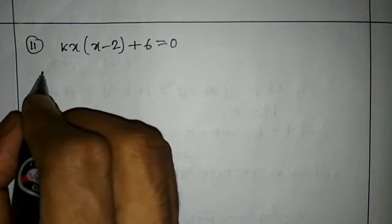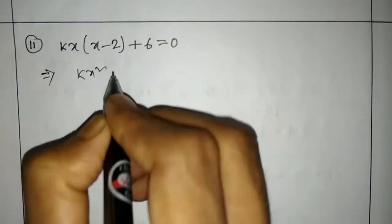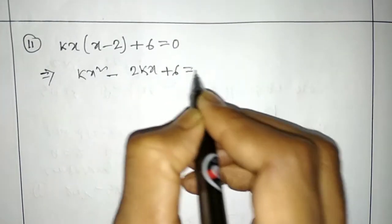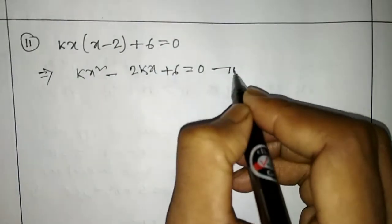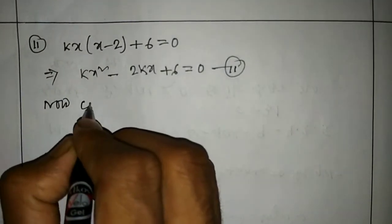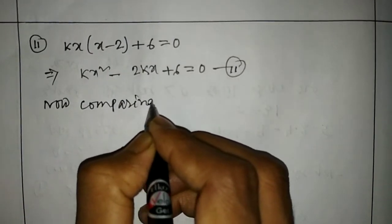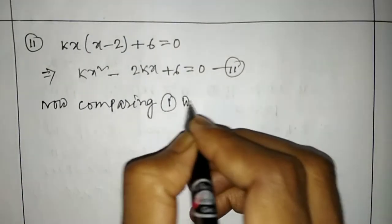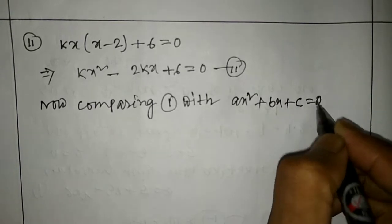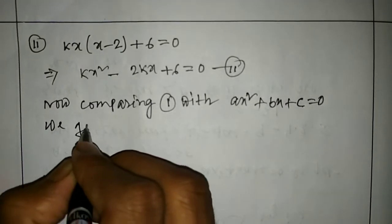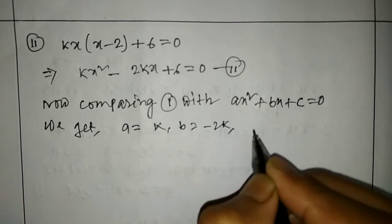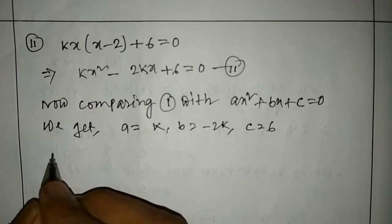This is question number 2: kx(x minus 2) plus 6 equals 0. Expanding: kx squared minus 2kx plus 6 equals 0. Comparing with ax squared plus bx plus c equals 0, we get a equals k, b equals minus 2k, c equals 6.